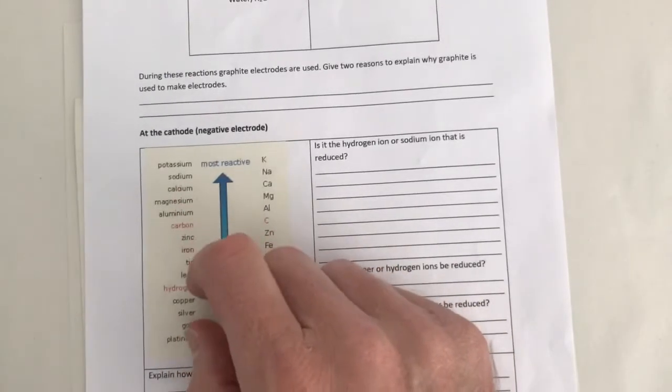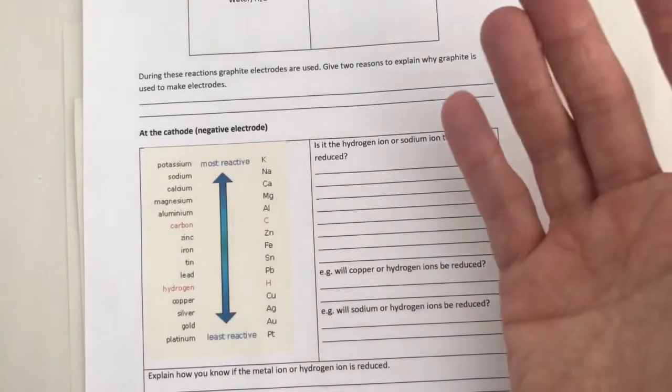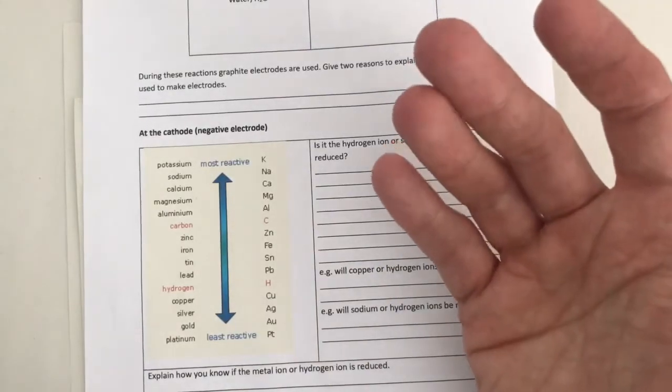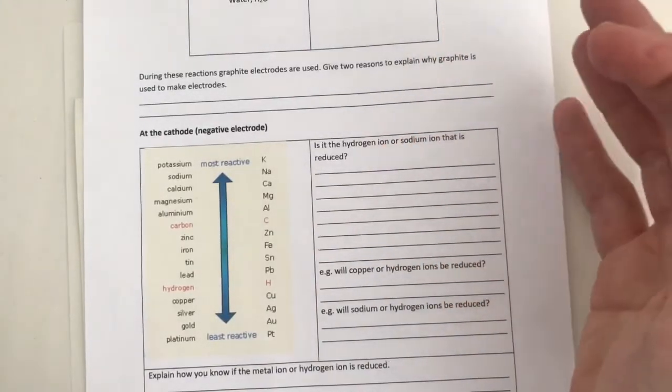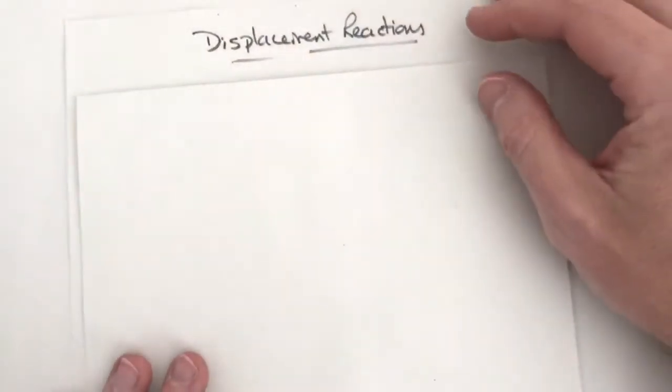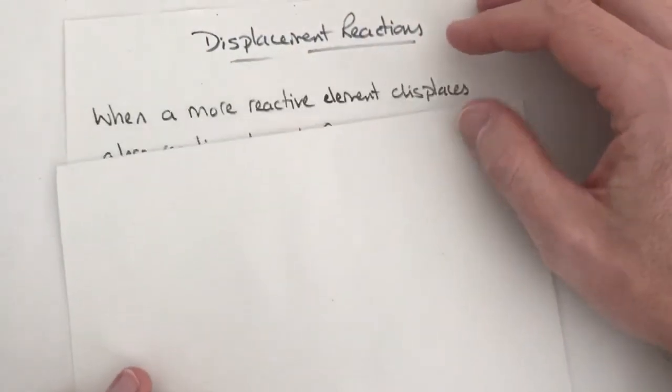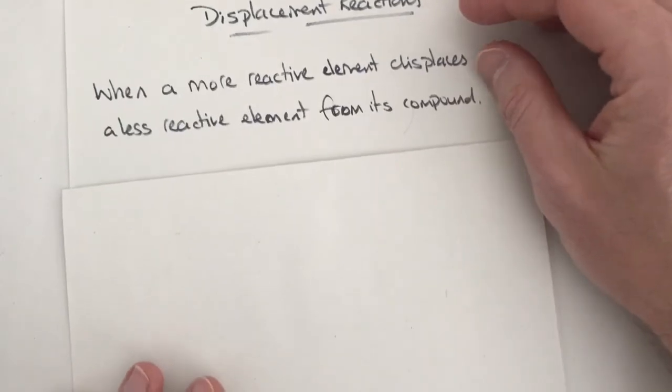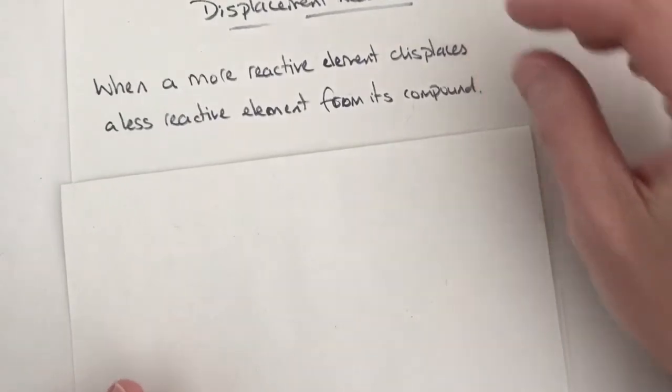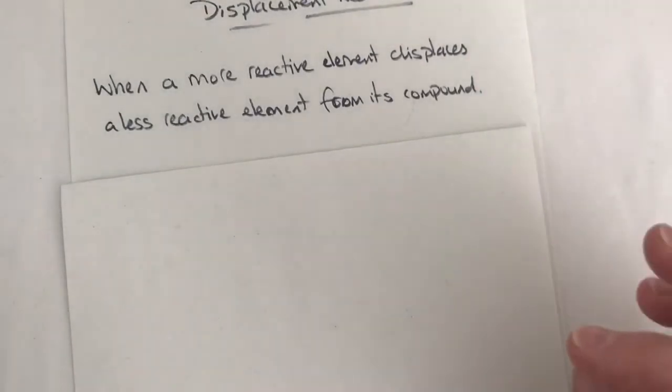We're going to use this idea to make predictions and use these ideas to understand what is meant by a displacement reaction. So first of all it would be useful just to define a displacement reaction. It's when a more reactive element displaces, pushes out a less reactive element from its compound.